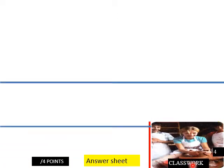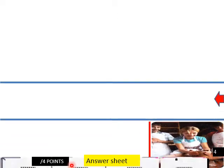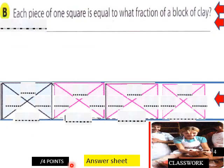This is page four of classwork here. Each piece of one square is equal to what fraction of a block of clay? So each piece of one square is equal to what fraction of a block of clay? And that would be one fourth. These blocks are divided into one fourth.